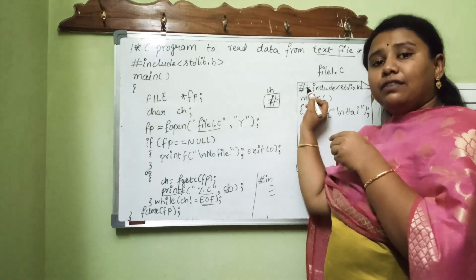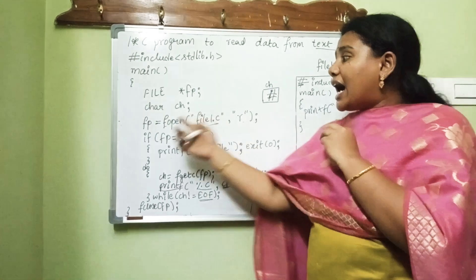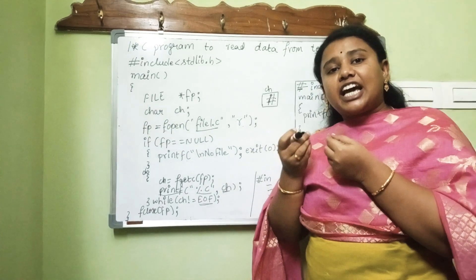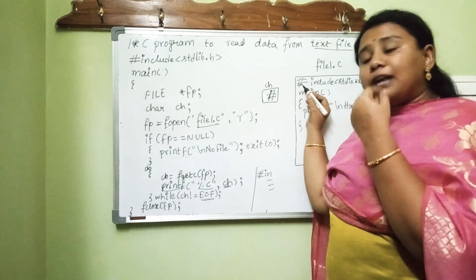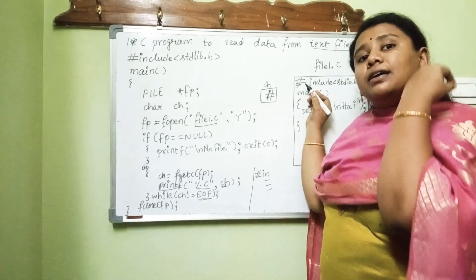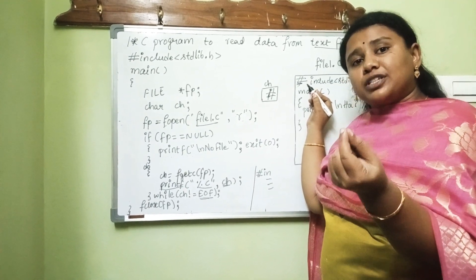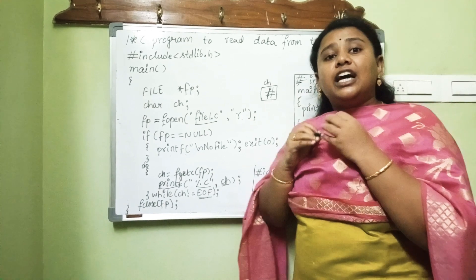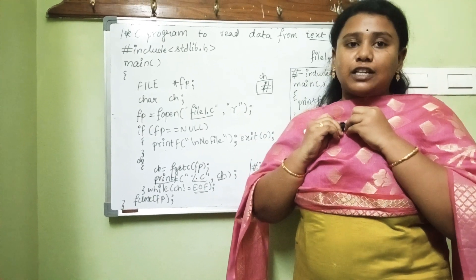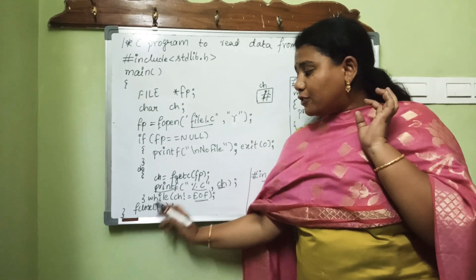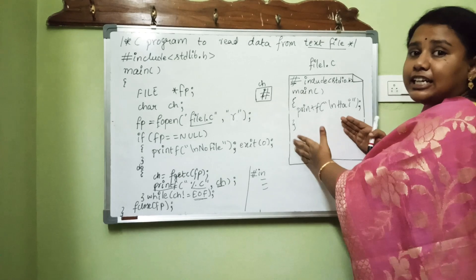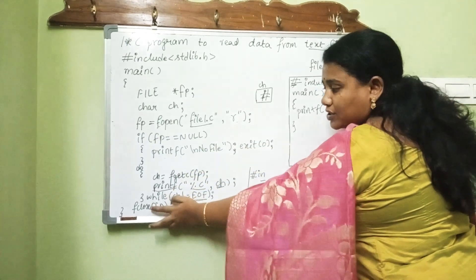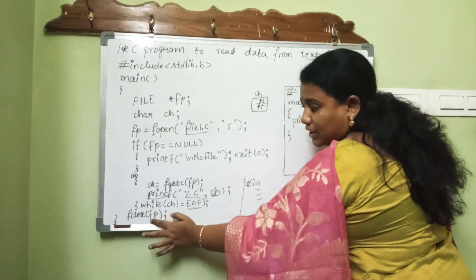To summarize: we open the file in read mode and assign the address to file pointer fp. Then we take each and every character pointed to by fp, place it in character variable ch, and print that character on the output screen using printf. This task is continuously done until we reach the EOF character, which stands for end of file. After this task is completed, we have to close the file pointer since the task of reading and printing is done.